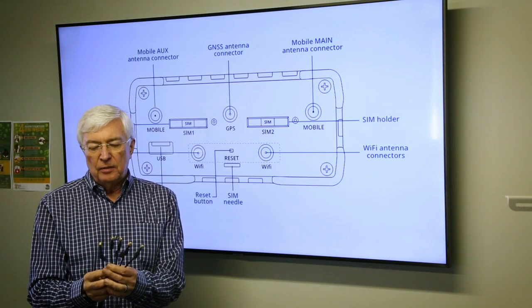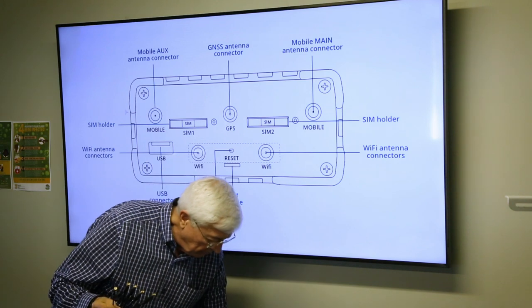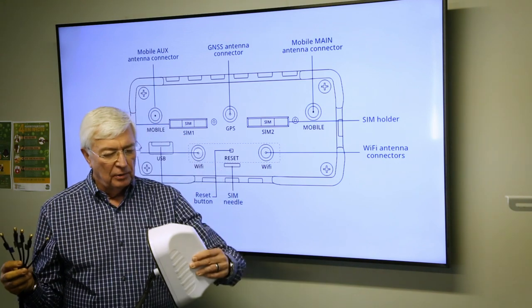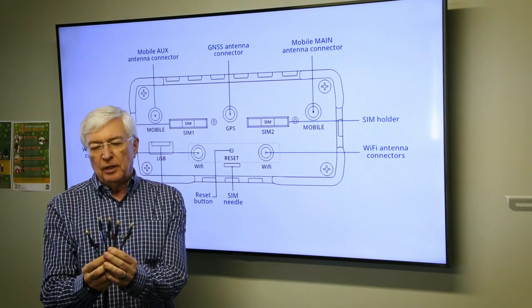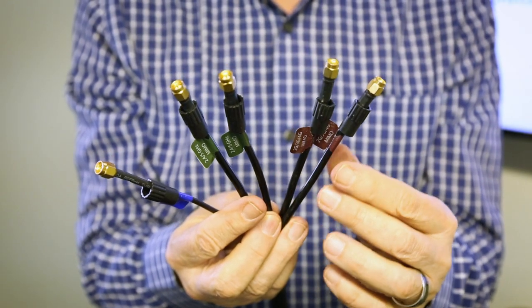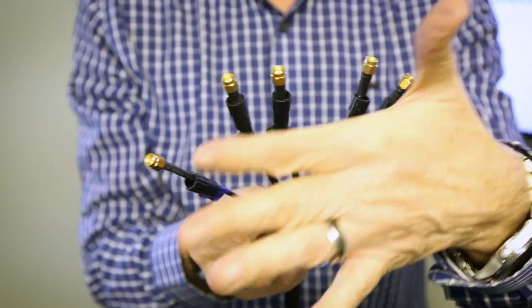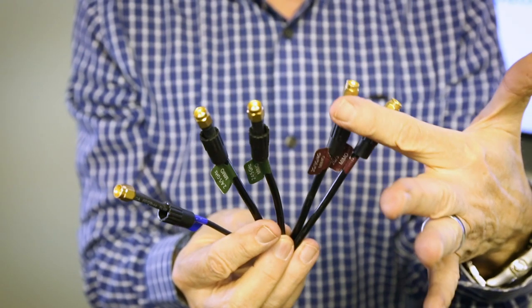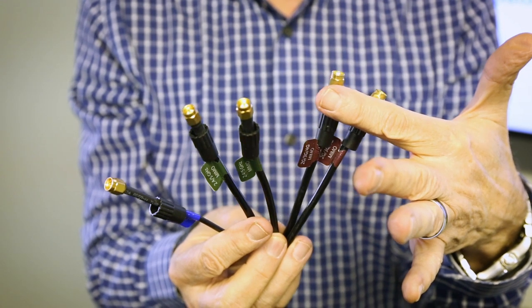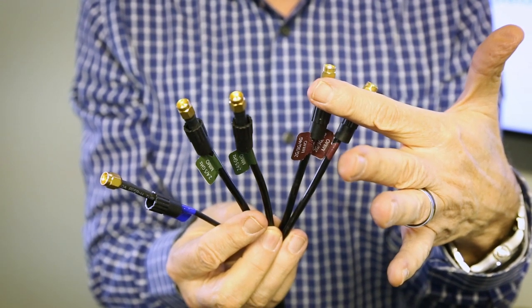After you've unboxed your V3 antenna, this is a model 15, you will be faced with a myriad of cables and how to connect this to your router. You'll find that there's two LTE connectors, they're actually marked 2G 3G 4G.